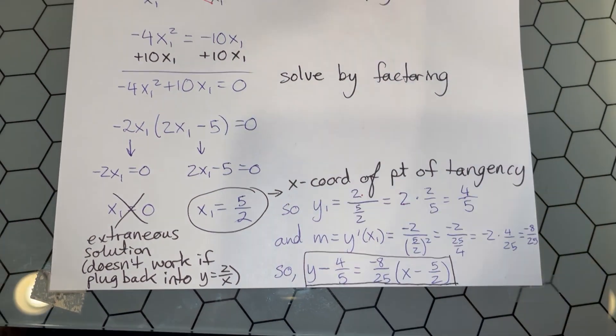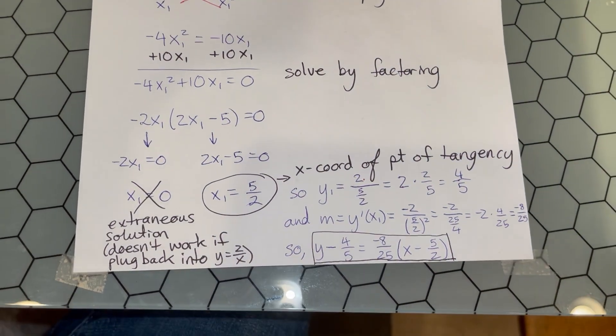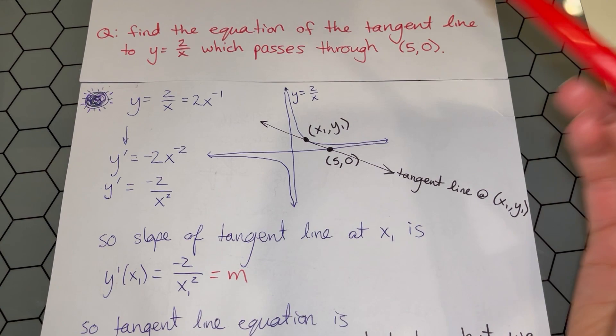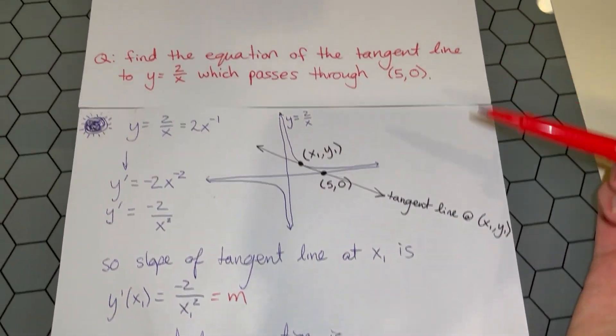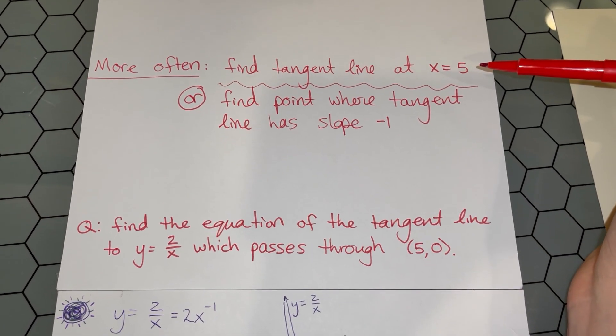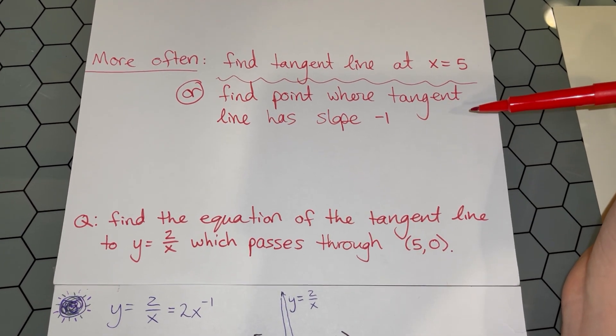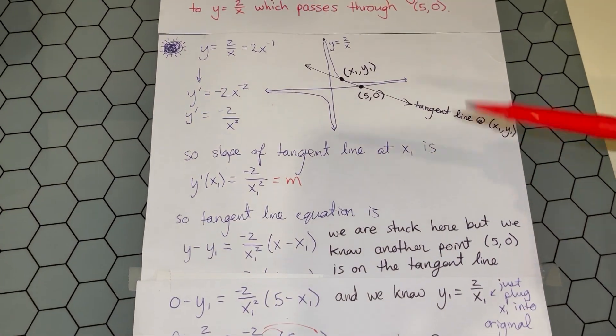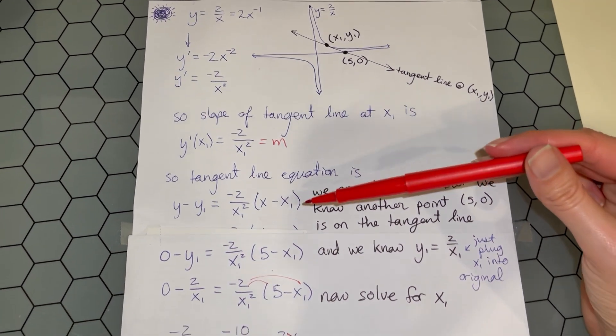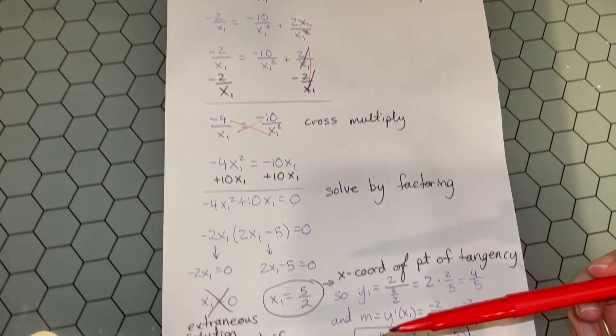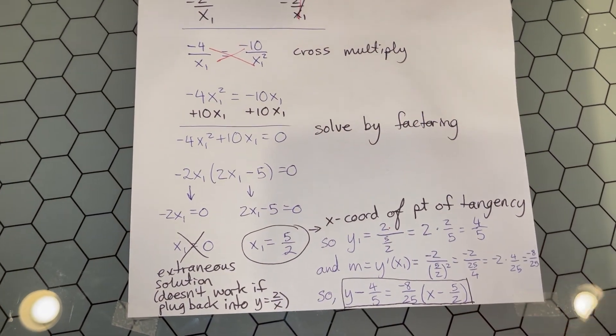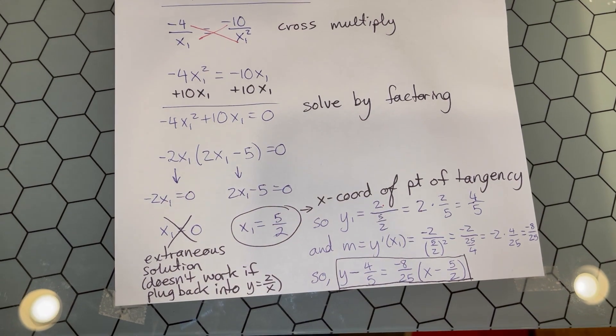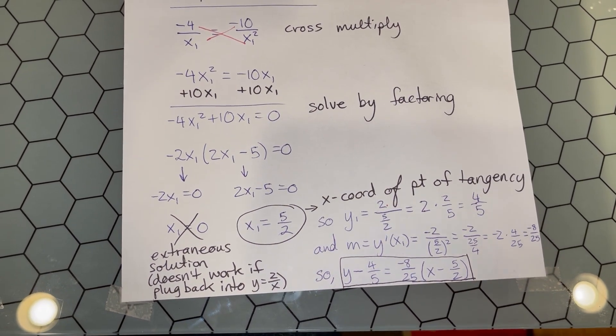These types of problems where they give you less information about the tangent line can be tricky. But if you have a tangent line problem and feel overwhelmed, just start by taking the derivative. When you're not given the x location or the slope, you might have to do these more abstract problems where you still use the slope and point-slope form, but be more creative to solve for the unknowns. Let me know what other tangent line problems are tough for you - I'd love to help with examples. Have an amazing day!